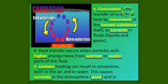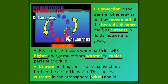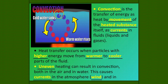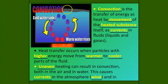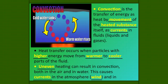Convection is the transfer of energy as heat by movement of the heated substance itself, as currents in fluids like liquids and gases. Warm air is always going to go up and cold air is going to come down. Like when you see little bubbles rising in a pot on the stove — those rising bubbles are the warm water that's been heated. Then the cold water on the surface shoots down to replace it, and the cycle continues until it reaches a roaring boil.